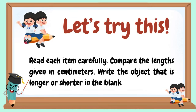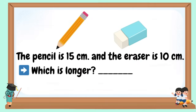Let's try this. Read each item carefully. Compare the lengths given in centimeters. Write the object that is longer or shorter in the blank. The pencil is 15 cm and the eraser is 10 cm. Which is longer?